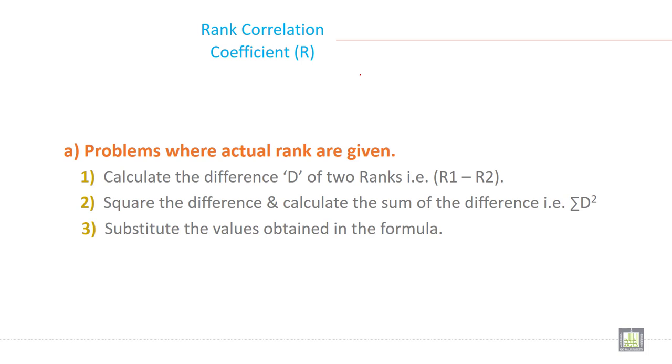Calculate the difference D of two ranks. If rank is given, simply calculate the difference between two ranks, square the difference, calculate the sum of differences, and then substitute the values obtained in the formula. These are the simple steps.